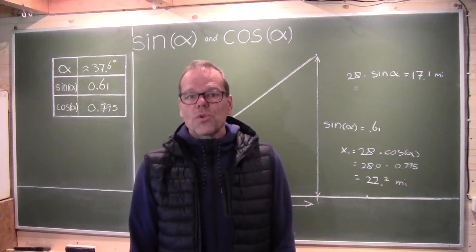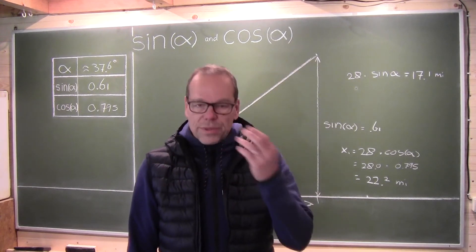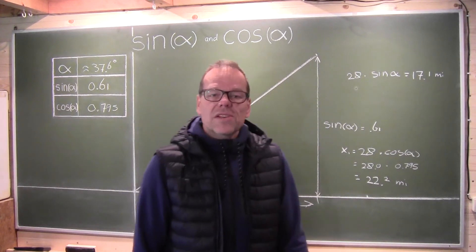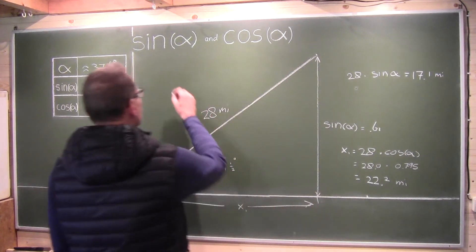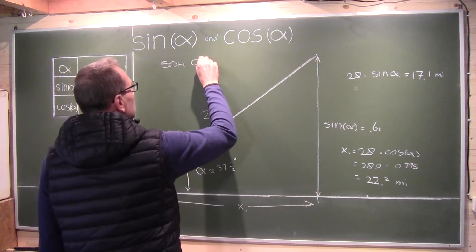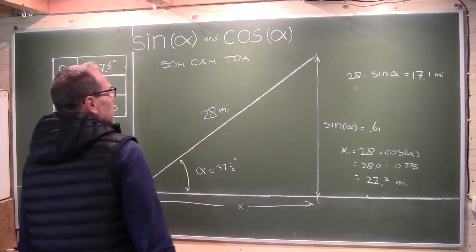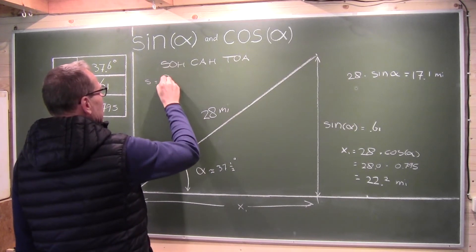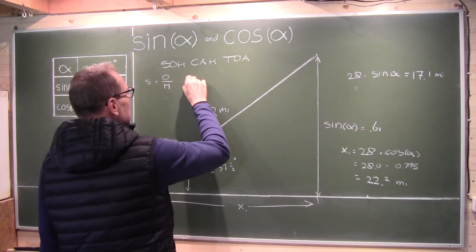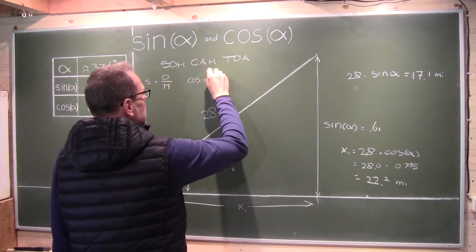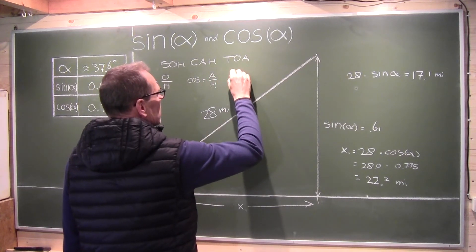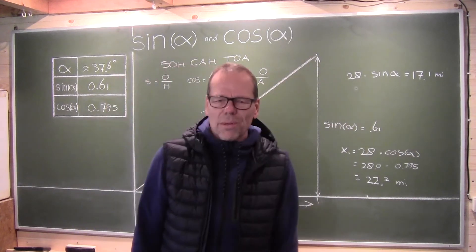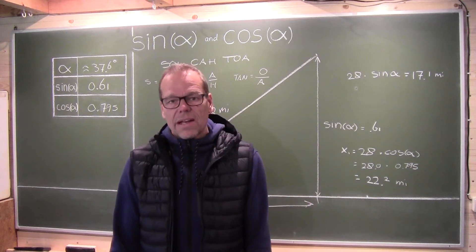So you see, a sine and a cosine are very useful tools. Why do I disagree with the explanation most people give you for the sine and the cosine? Most people will immediately start telling you about SOHCAHTOA. This is an acronym which basically says that your sine equals the opposite side divided by your hypotenuse, your cosine equals your adjacent side divided by your hypotenuse, and your tangent equals your opposite side divided by your adjacent side.